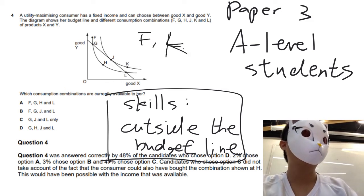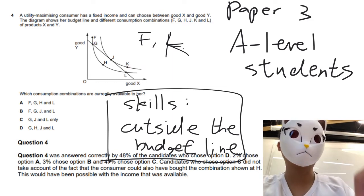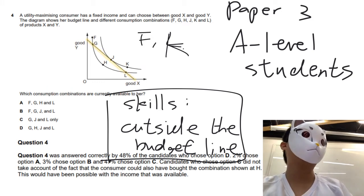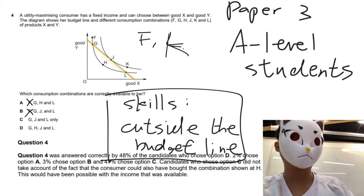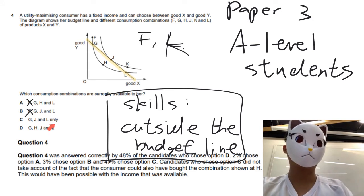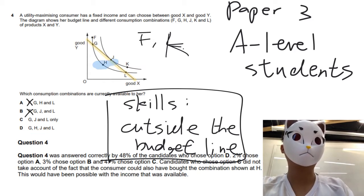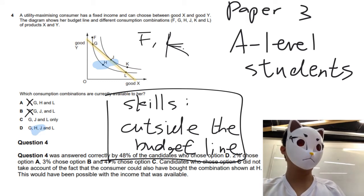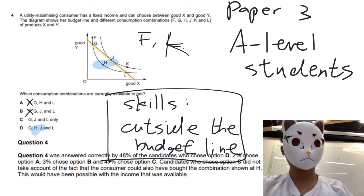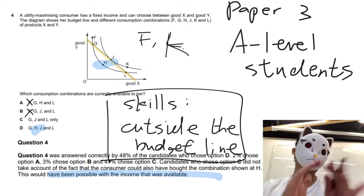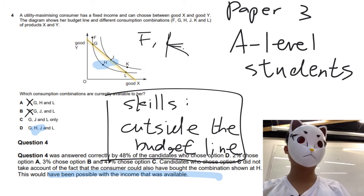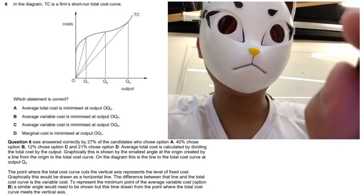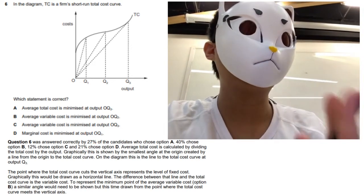Point F and point K are outside the budget line, so these are not the answers — options A and B are wrong. It lies on C or D. Think about the differences: option H is inside the budget line. So indeed, it will be possible — the resource utilization might not be maximized, but it is still possible. That's why the answer goes to D. Only 27% of candidates can answer this question correctly.